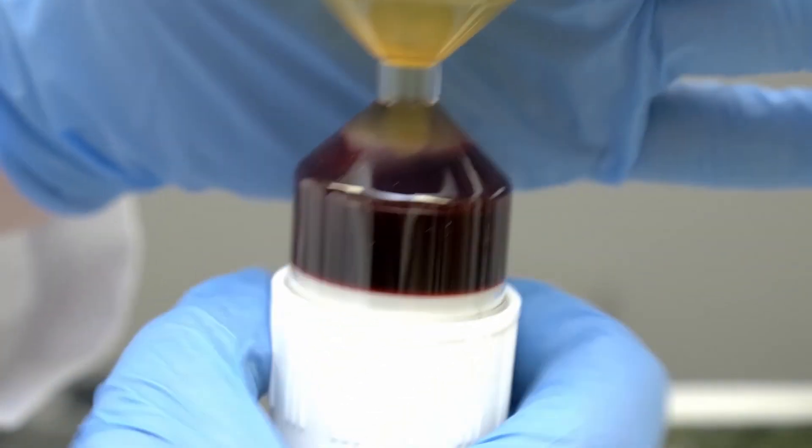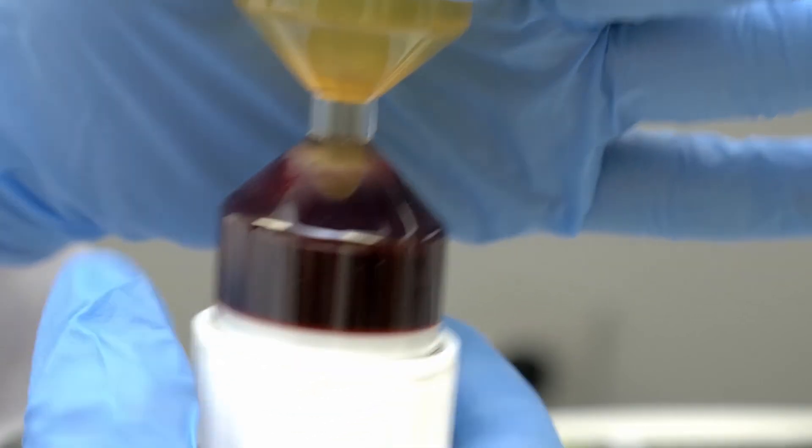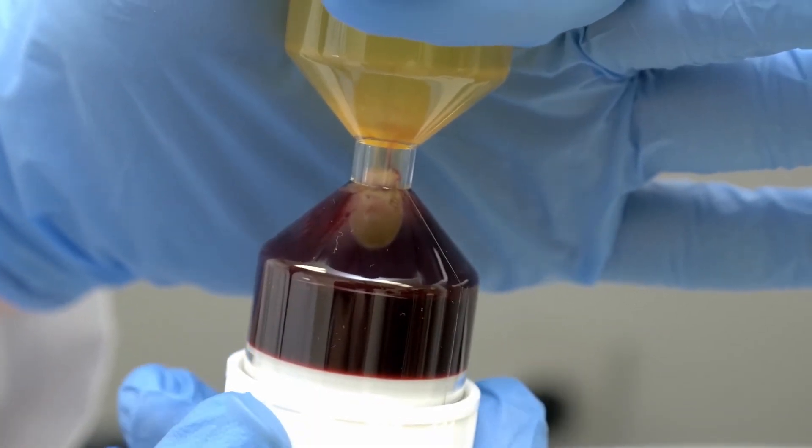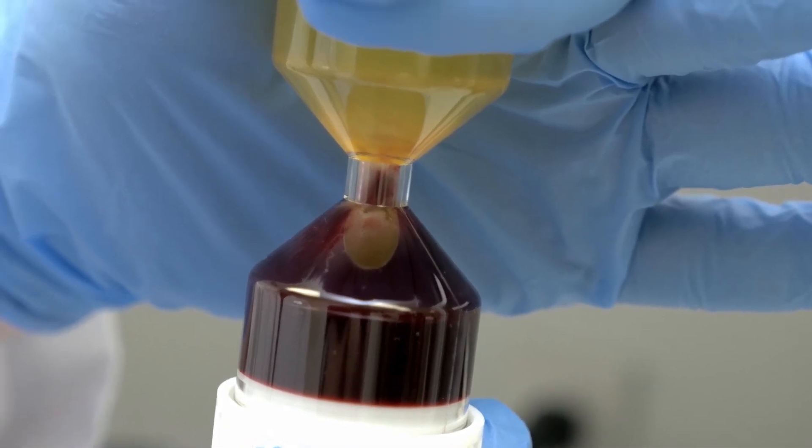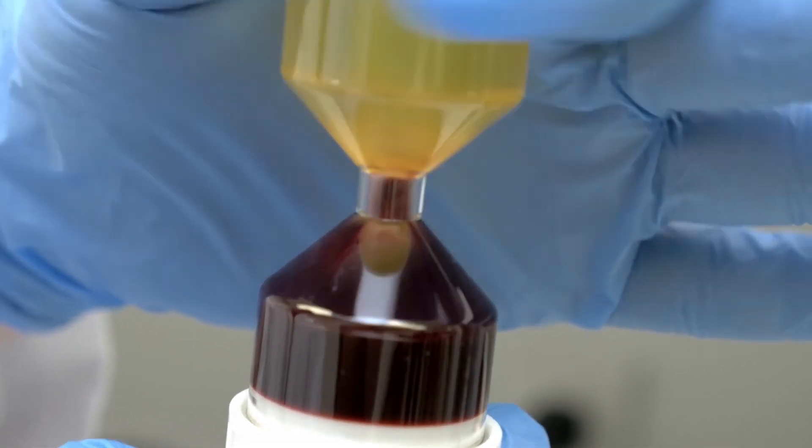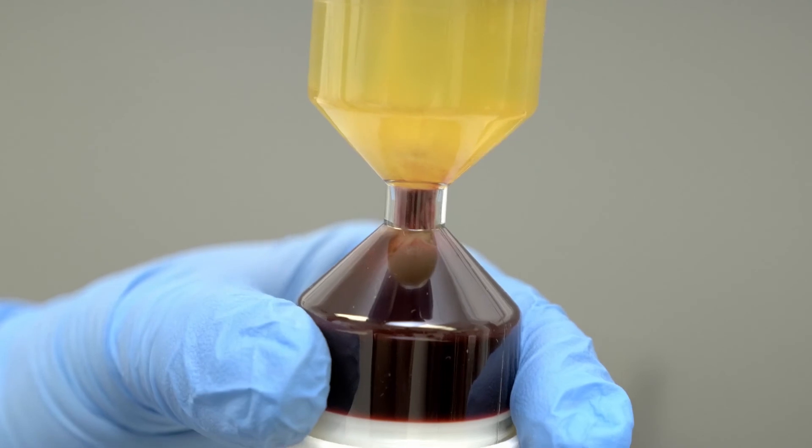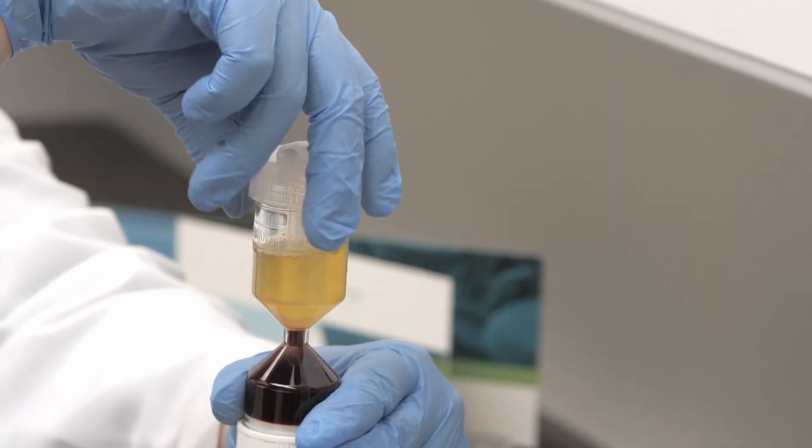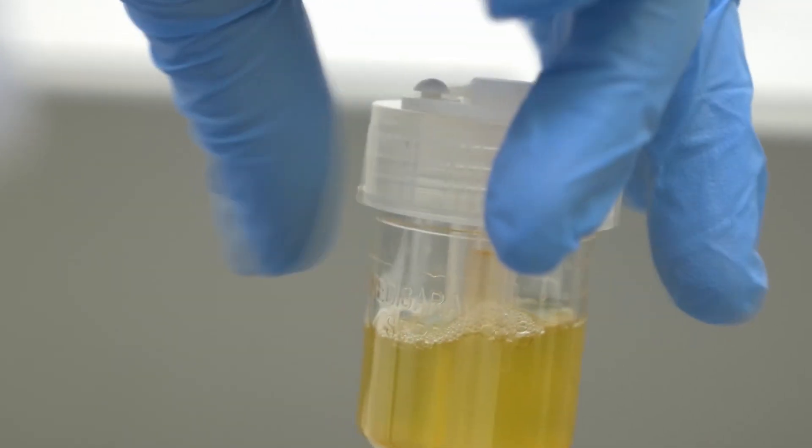Rise the red blood cells and buffy coat by turning the bottom collar counterclockwise until the buffy coat has reached the neck of the World PRP tube. Slowly turn the bottom collar until the buffy coat has been transferred into the top chamber leaving the red blood cells in the neck of the tube. Turn the collar clockwise to seal off the connection between the top and bottom chambers.